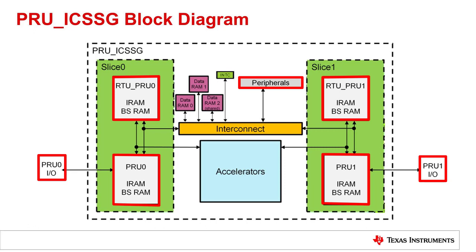We will also look at the different IO modes and integrated peripherals available within the PRU ICSSG. The PRU ICSSG is the next generation subsystem to the PRU ICSS, building on its features and capabilities. This module assumes that you have some familiarity with the PRU ICSS and will focus primarily on new or upgraded features within the PRU ICSSG.